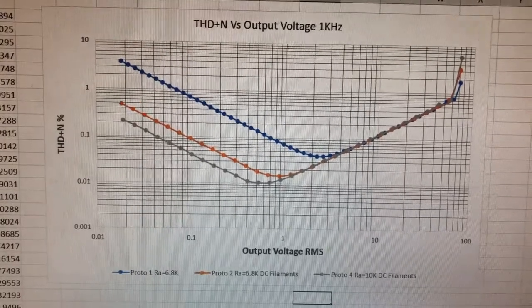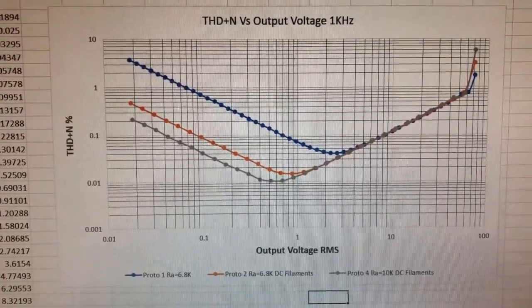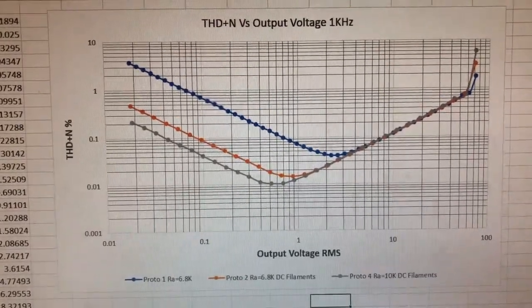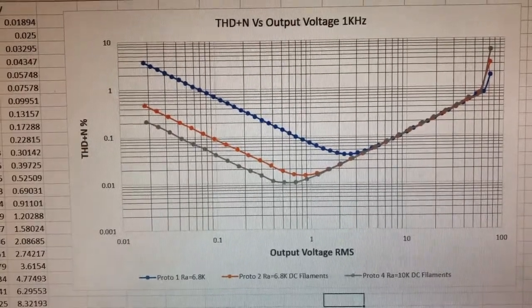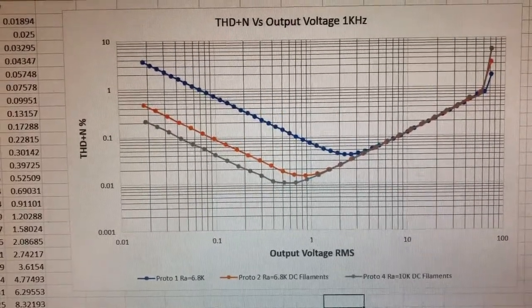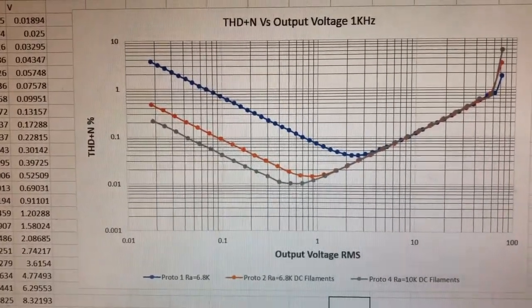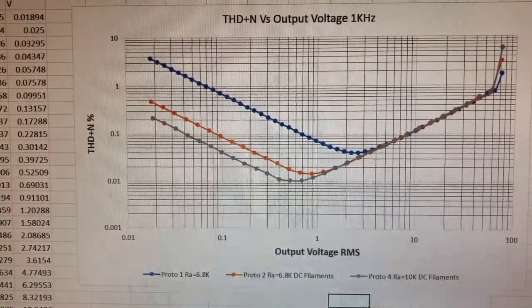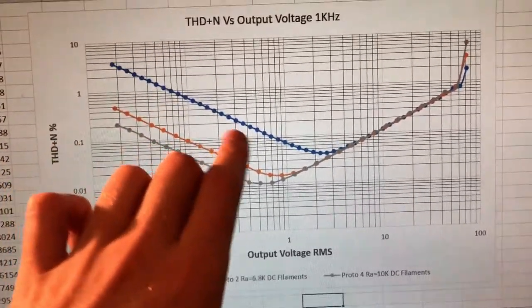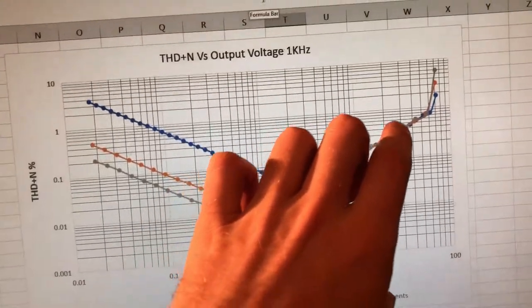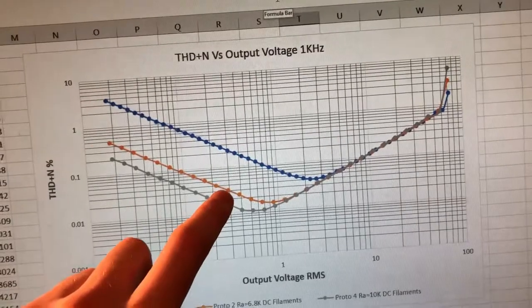I've been prototyping this amplifier stage in a prototype chassis that I'll show in a minute, and I've done a few different iterations. Prototype 1 with that 6.8K equivalent RA resistor. Prototype 2 in orange is that same stage, but I'm now using DC filaments. So we can see a big reduction in noise. Here our THD is essentially noise limited until we start seeing harmonics show up and then obviously up here we're clipping.